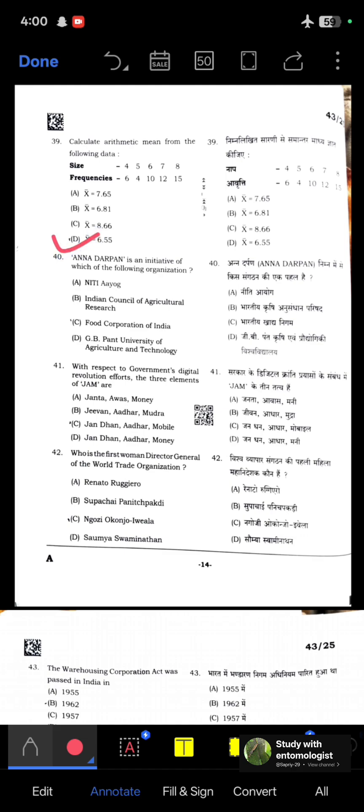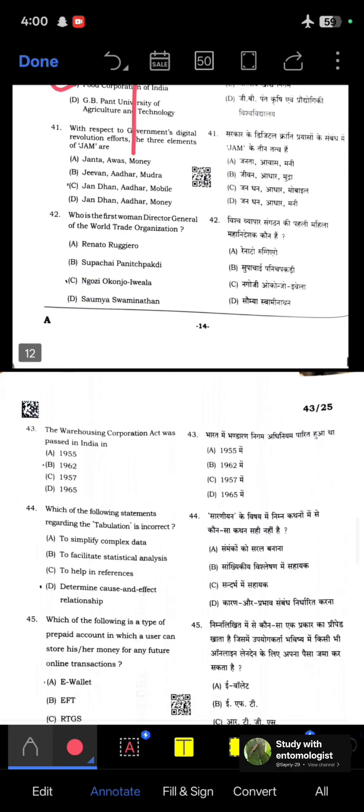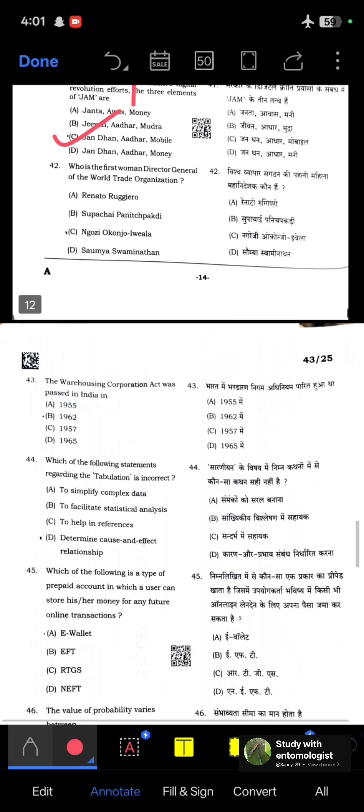Annapurna is an initiative of which organization? NITI Aayog, ICAR, FCI, and GB Pant University of Agriculture and Technology. It is basically a program of FCI, Food Corporation of India. With respect to government's digital revolution efforts, the three elements of JAM are Jan Dhan, Aadhaar, and Mobile. Who is the first woman Director General of the WTO, World Trade Organization? Ngozi Okonjo-Iweala. Option C is correct.